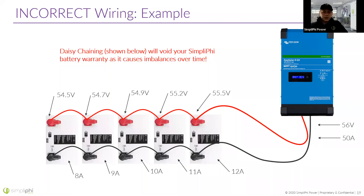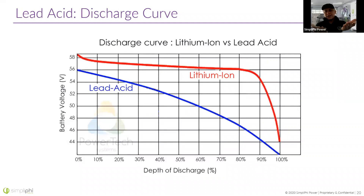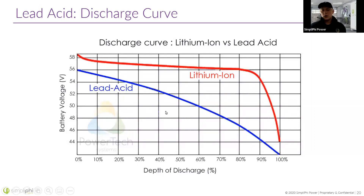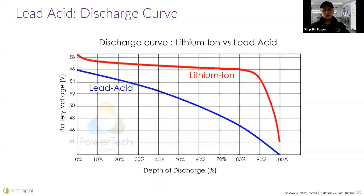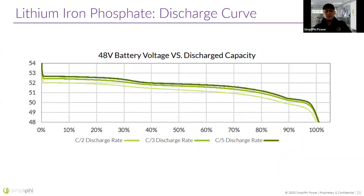Understanding not to daisy chain is important, and understanding the flat discharge and charge curve of lithium batteries is the same reason you need battery monitoring. With a lead acid battery you can measure the voltage and get a close idea of state of charge. With a lithium ion battery, measuring voltage tells you very little about its state of charge — you're pretty much in the dark until you have a battery monitor. That monitor measures the amount of current that's gone into the battery and the amount that's come out. It's important to not only wire properly, but have a battery monitor if you're doing a DIY system.